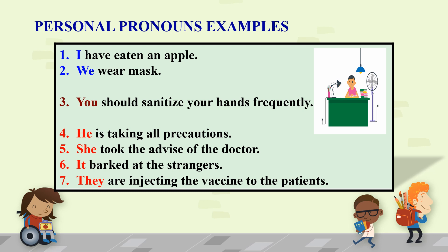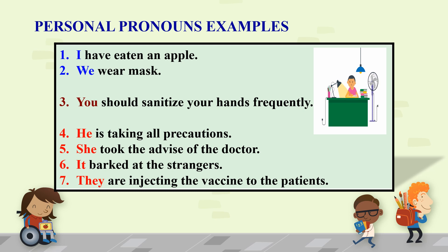She took the advice of the doctor. It barked at the strangers. In these sentences, He, She, It are the third person singular pronouns. They are injecting the vaccine to the patients. In this sentence, the pronoun They is the third person plural pronoun.